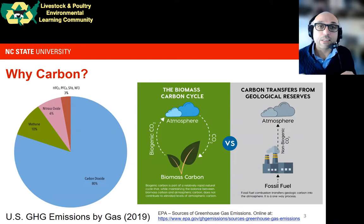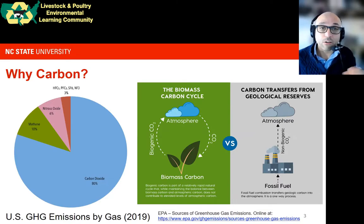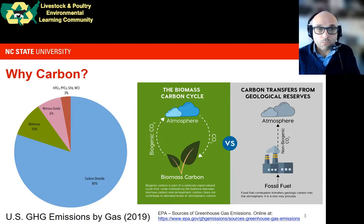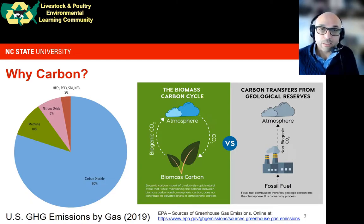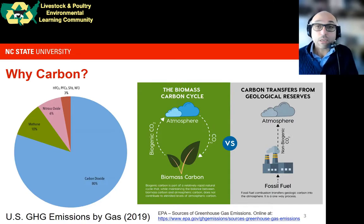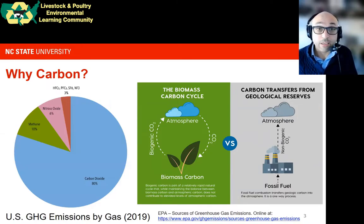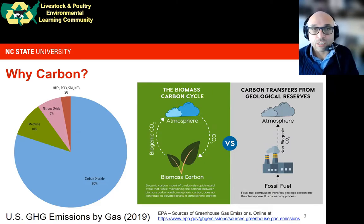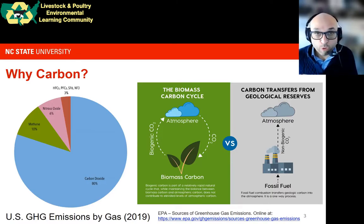An important distinction is between short-lived or biogenic carbon — the carbon released when plant tissue dies or decomposes, releasing CO2 that was absorbed from the atmosphere within a recent growing cycle — versus long-lived or fossil carbon, which is carbon stored for millennia and released through combustion of fossil fuels like natural gas, diesel, and coal. This distinction is very important when we talk about the two forms of carbon emissions.